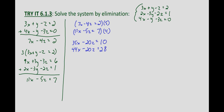Now I'm going to subtract the second equation to eliminate the z variable. I'll change the sign on everything in the second equation and add: 35x - 44x = -9x, and 10 - 28 = -18. So -9x = -18, which gives us x = 2.